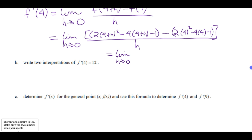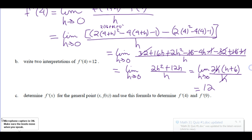We want to expand this. After the algebraic expansion, we end up with a limit as h approaches 0. We can factor out terms with h, cancel, substitute h = 0, and we get 12.